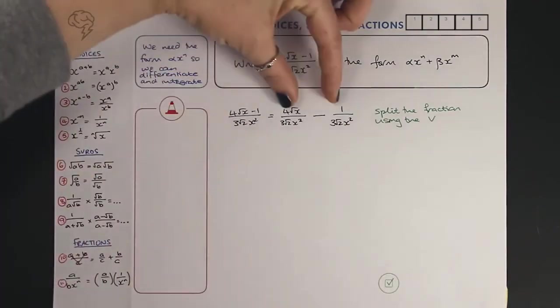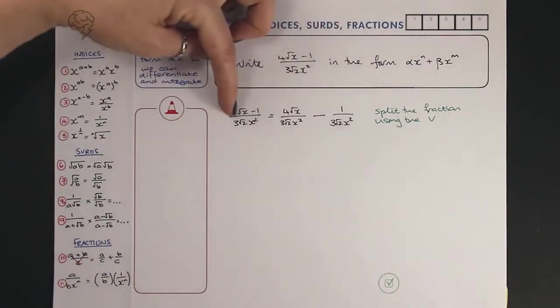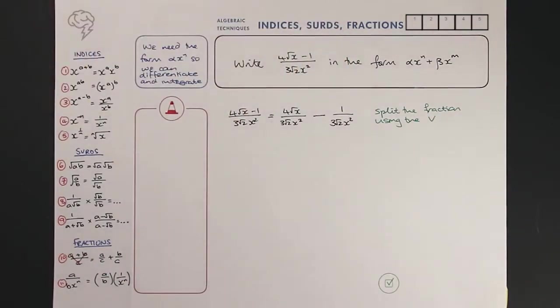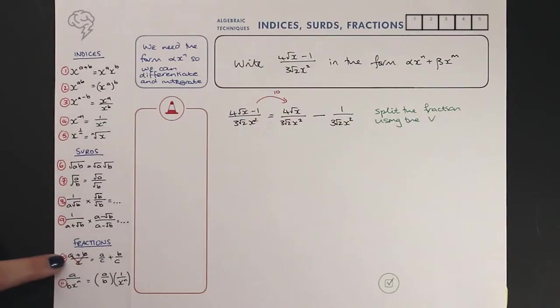If you think about it backwards, how would I add these two up? I'd make the bottoms the same - the bottoms are the same - then I'd add the tops, so the bottom would stay the same and I'd add the tops. So this is using rule 10. Now what do we need to do next? This looks a bit more like this, but we need to separate out these numbers and x's.